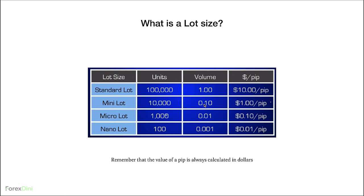We also have a mini lot — a mini lot has 10,000 units and the volume is 0.10. The value of a mini lot is $1 a pip, so if you make 10 pips, you've made $10. We also have a micro lot with 1,000 units and volume of 0.01, meaning you make $0.10 per pip (10 cents a pip), so 10 pips equals $1. Last but not least, a nano lot has 100 units, volume of 0.001, and the value is $0.01 per pip (1 cent a pip), so 10 pips equals 10 cents.